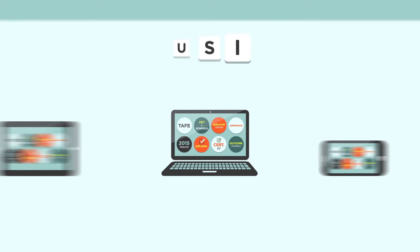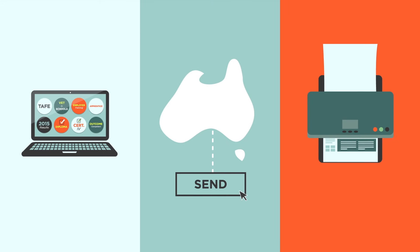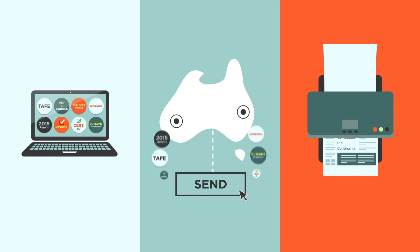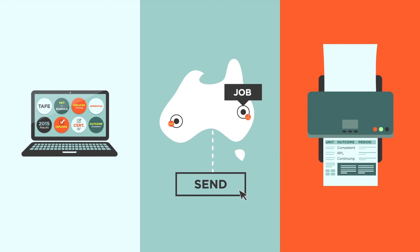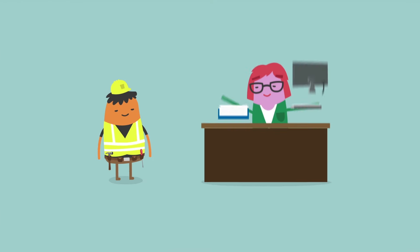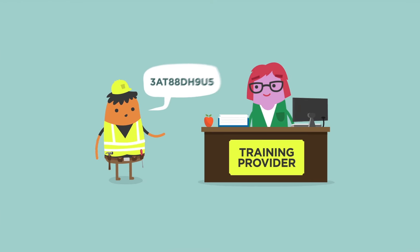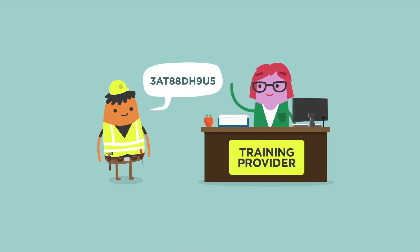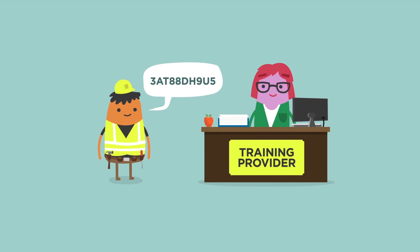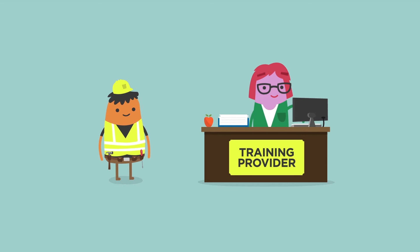You will also be able to see, send or print out your training records when applying for a job or further training. Each time you enrol with a new training provider, your USI will be required, so they can make sure your records and results are placed into your account.